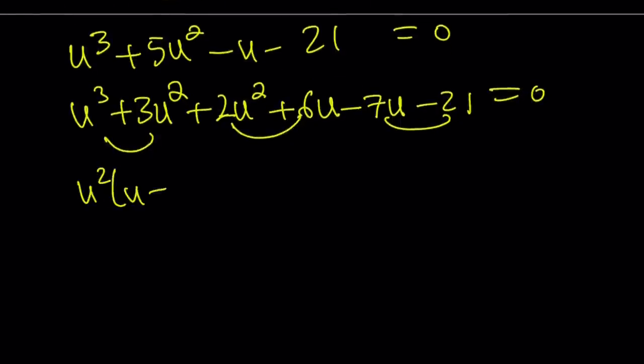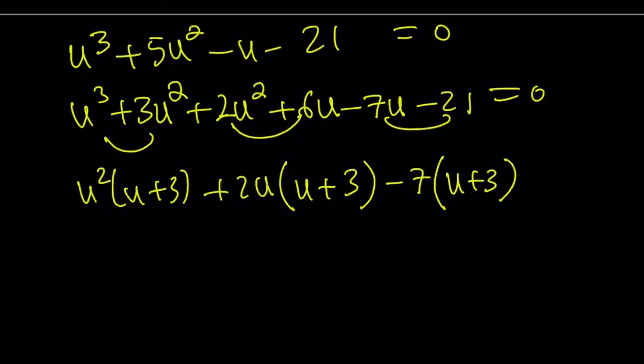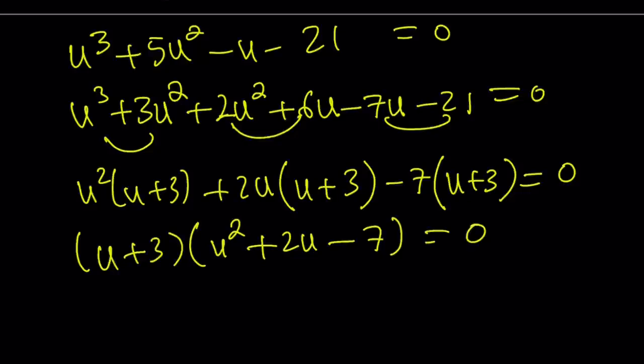And guess what? This is factorable by grouping. u squared times u plus 3 plus 2u times u plus 3 minus 7 times u plus 3. And this becomes 0. So u plus 3 take out. Inside, I have u squared plus 2u minus 7 equals 0. So this is my quadratic factor.